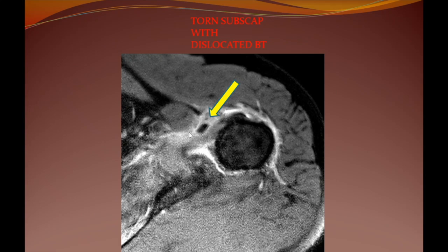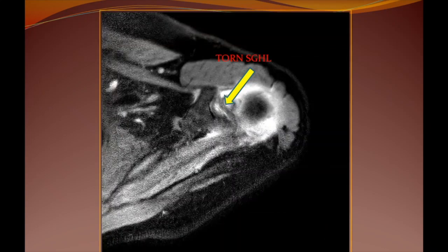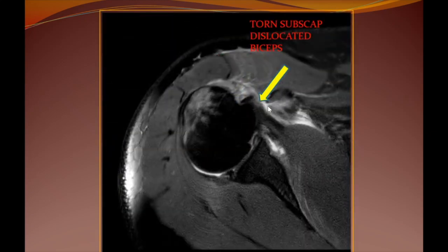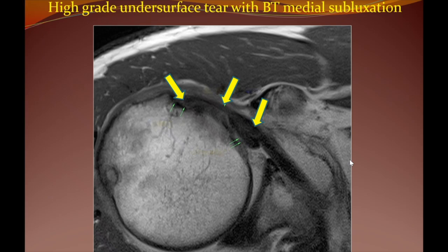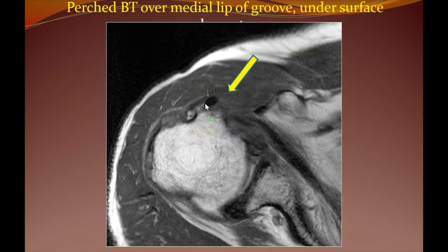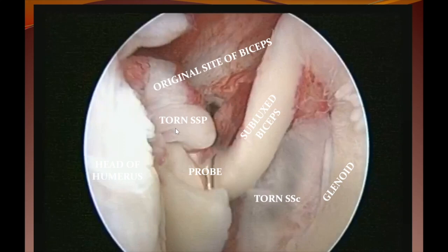In one case the biceps is way away from where it is supposed to be — a completely dislocated biceps. Another completely dislocated biceps with a torn SGHL seen nicely. Another case of dislocated biceps with torn subscapularis tendon. An early biceps subluxation with a subscapularis delaminating tear, with an associated supraspinatus tear. A high-grade undersurface tear of subscapularis with biceps tendon medial subluxation, just perched over the medial lip of the groove. One case shows the biceps tendon gone into the substance of the subscapularis — the so-called football in quarterback appearance.